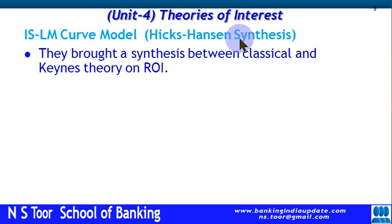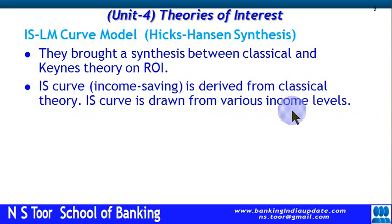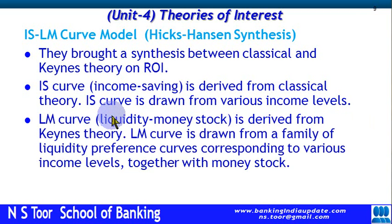What Hicks and Hansen did was to mix the classical theory of interest and Keynes' theory of rate of interest. The IS curve — that is, the income-saving curve — is derived by using the classical theory of interest and is drawn from various income levels. The LM curve — that is, the liquidity money stock curve — is derived from Keynes' theory, and is drawn from a family of liquidity preference curves corresponding to various income levels.